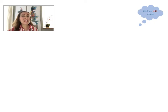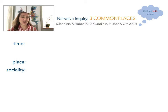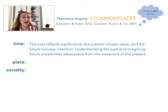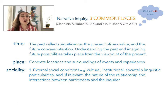This grand narrative attends to what Clandinin and others call three commonplaces: time, place, and sociality. All three apply to the story itself and the research context in which the story is told or discovered. Time acknowledges that everything is transitional and there is continuity between the past, present, and future — such that the past reflects significance, the present infuses value, and the future conveys intention. Understanding the significance of the past and imagining future possibilities takes place from the viewpoint of the present. Place refers to the concrete locations and surroundings of events and experiences, including those of the research context. Sociality has two parts: firstly, it includes external conditions — social conditions such as cultural, institutional, societal, and linguistic particularities — and the nature of the relationship and interactions between participants and inquirers.